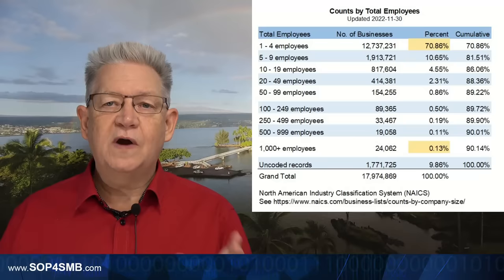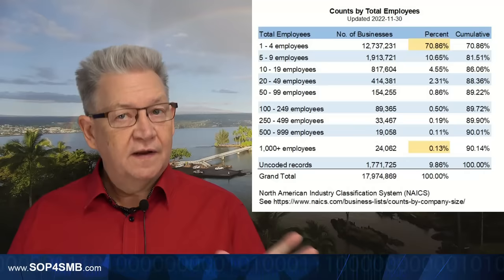Now take it all the way up to 100 employees. So if you have an owner and 99 employees, all the businesses between one and 99 represent 89% of all the businesses in the United States. That's about 16 million businesses.